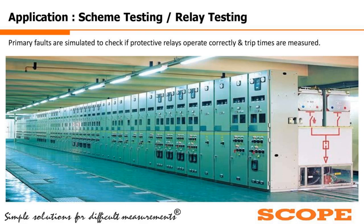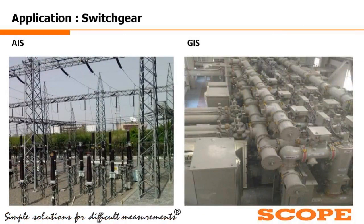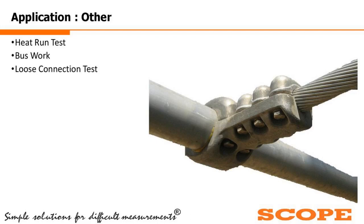Protection scheme or relay testing can also be done with the primary injection test. Rated current flows from the CT and accordingly when the current exceeds the limit, the relay senses it and gives the command to the circuit breaker. Checking the healthiness and correctness of the protection relay is very important, and this is easily done with primary current injection. Other applications include verifying the design of GIS (gas insulated switchgear) and AIS (air insulated switchgear).